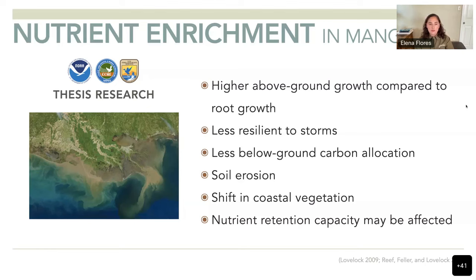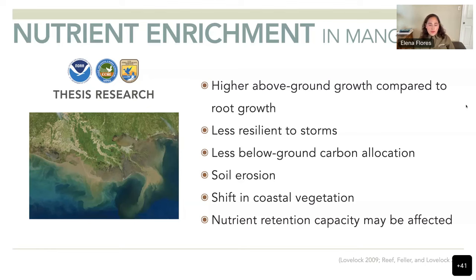That means if a hurricane or strong storm hits, it can wipe out the mangroves quickly because they are not attached strongly enough to the substrate. There is also less below-ground carbon allocation, which produces soil erosion, and we have seen a shift in coastal vegetation toward dominance by different species.